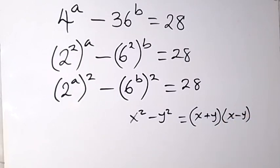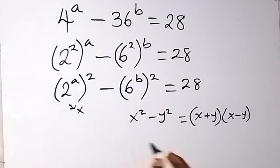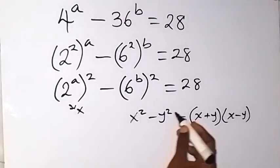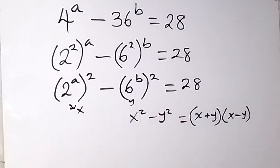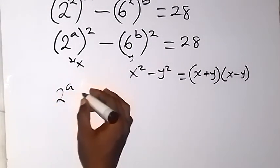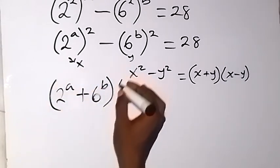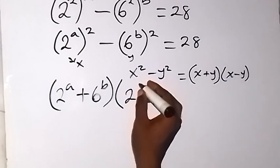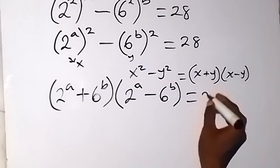So when we treat what we have here that way, our x is standing as 2 raised to power a, and our y is standing as 6 raised to power b. So now we have 2 raised to power a plus 6 raised to power b, multiplied by 2 raised to power a minus 6 raised to power b, equals to 28.